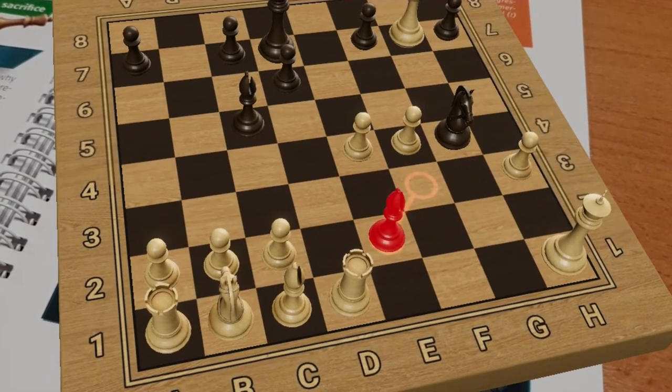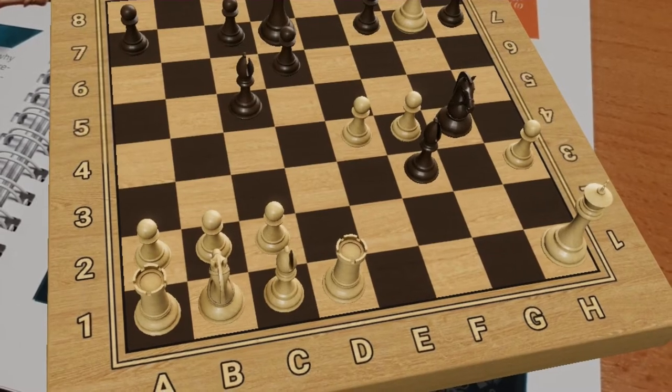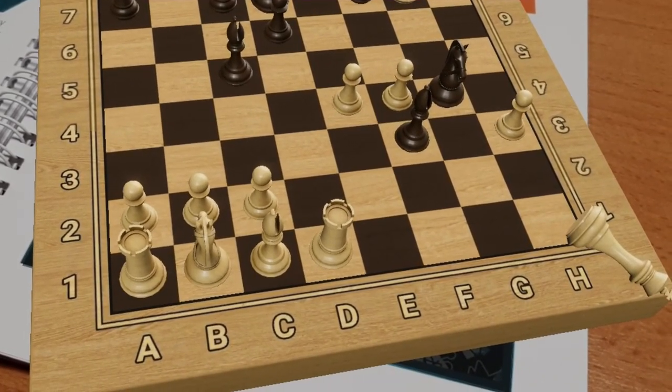After g takes h3, the white king position collapses completely, and black checkmates the defenseless king with his bishop moved to the long diagonal.